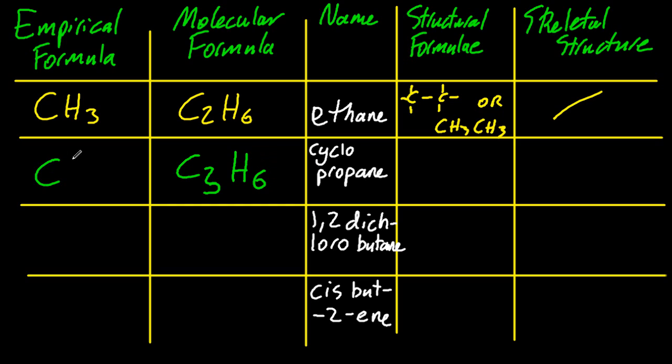For cyclopropane, with the structure, I have to unambiguously show how those three carbons and six hydrogens are arranged. There's two ways to do that. For the skeletal structure, you can see why we choose to do it in the questions—it's really easy to draw.